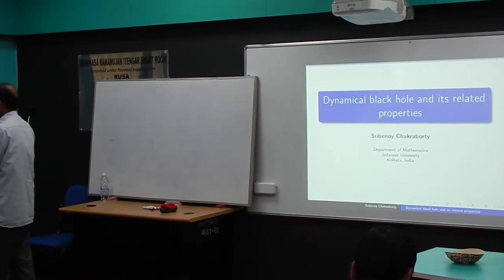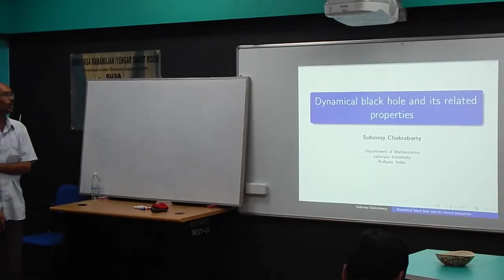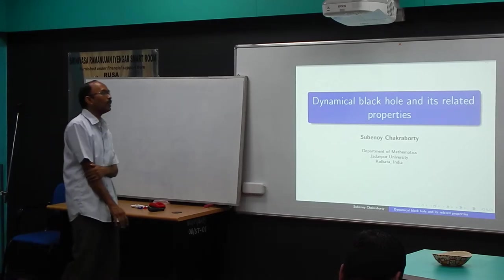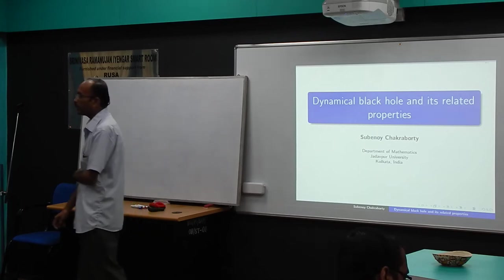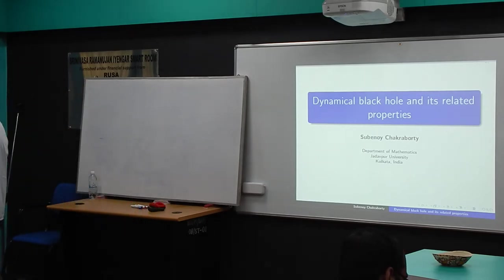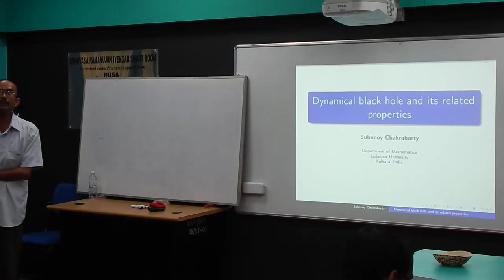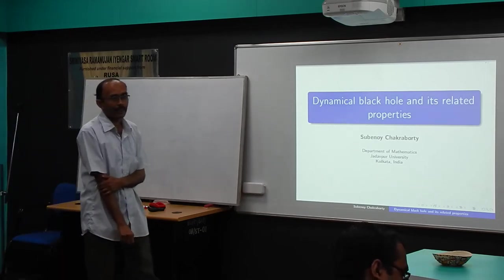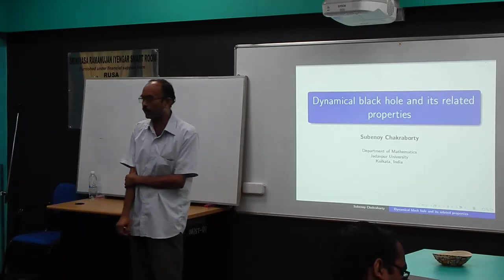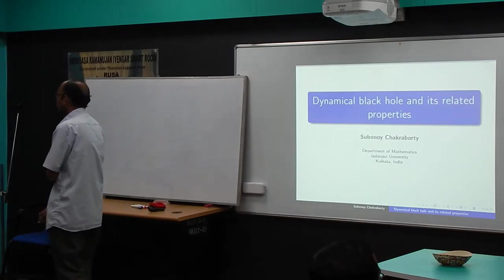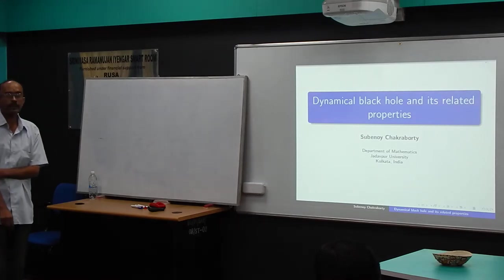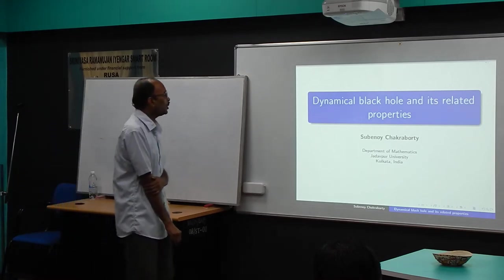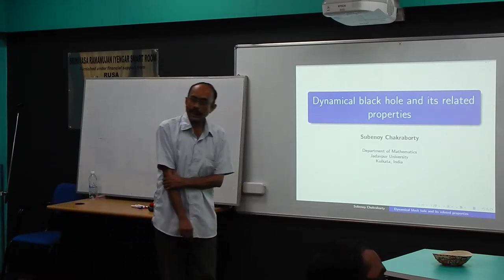There is a static black hole function which we need to know. Whenever we talk about the black hole, we mostly mean the static black hole. Static black hole means that all the metric coefficients are independent of the time coordinate — they are simply functions of the radial coordinate — and also there is no cross term in the metric between dt and dr.